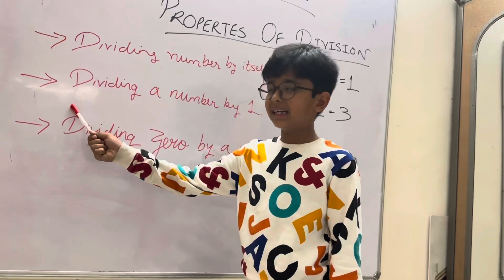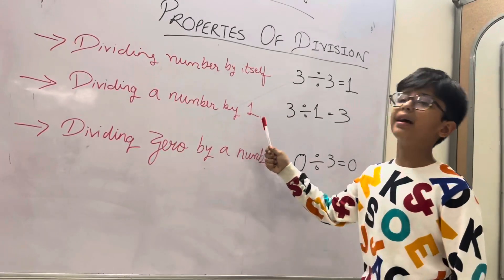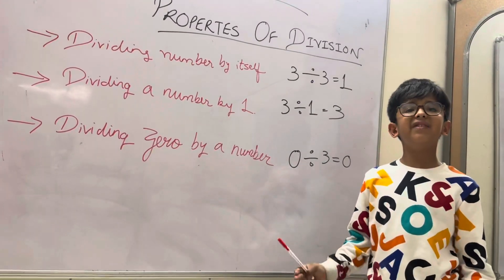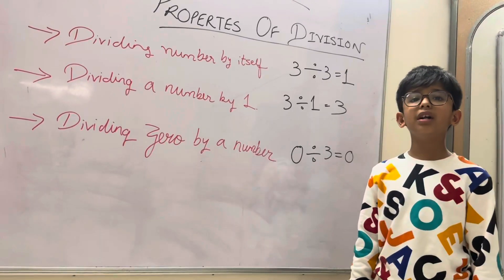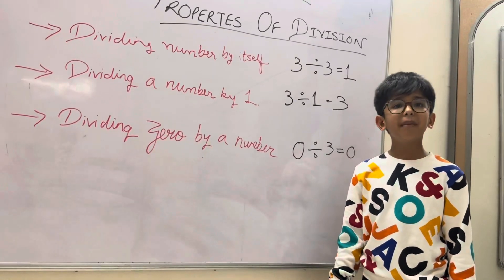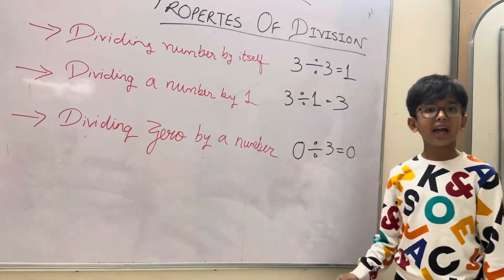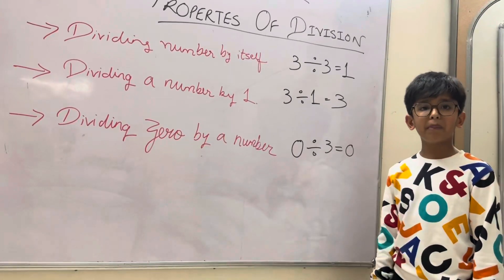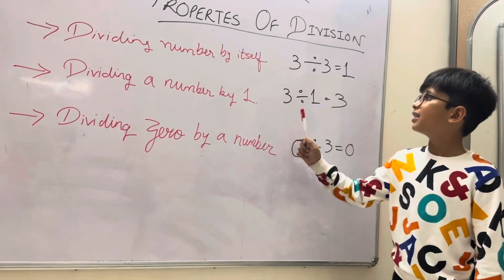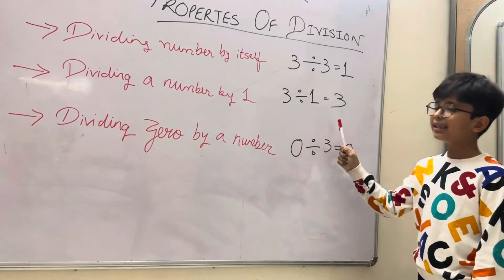Second property is dividing a number by 1. Any number divided by 1 gives the result of the number itself. Example is share 3 cakes to 1 person, so we have to write 3 divided by 1 equals 3.